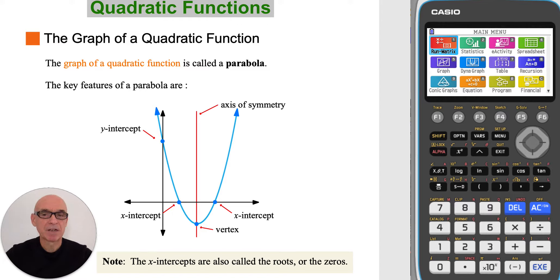The graph of a quadratic function is called a parabola. The key features of a parabola are its y-intercept, where the graph crosses the y-axis.